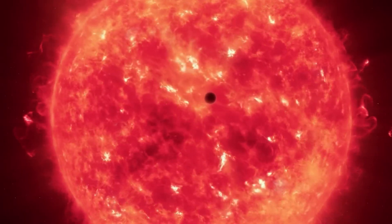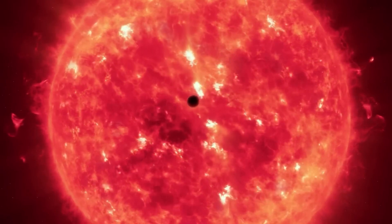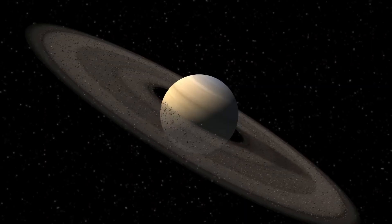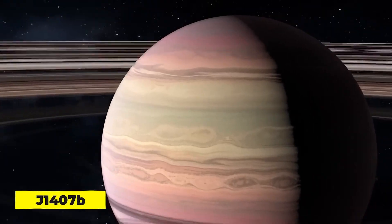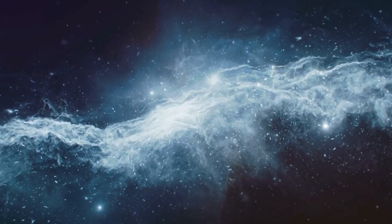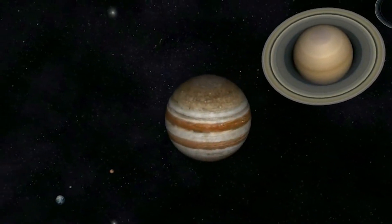To put its scale in perspective, if Betelgeuse were a bucket, it could accommodate approximately 300 million suns. Remarkably, despite its size, Betelgeuse's weight is only 17 times greater than that of the sun.